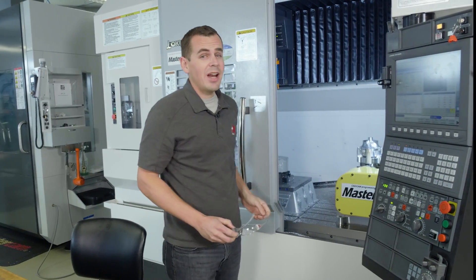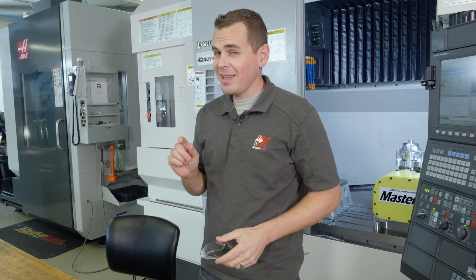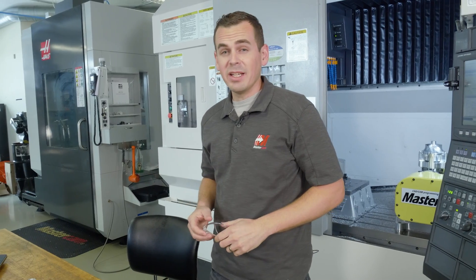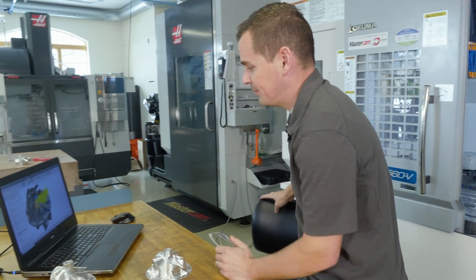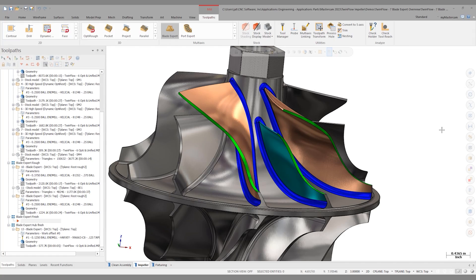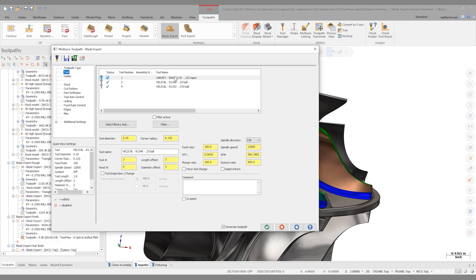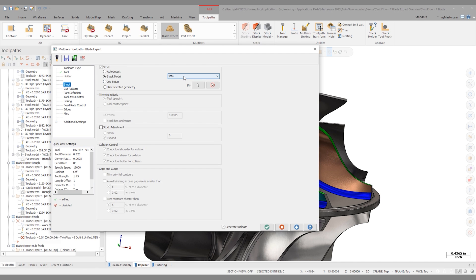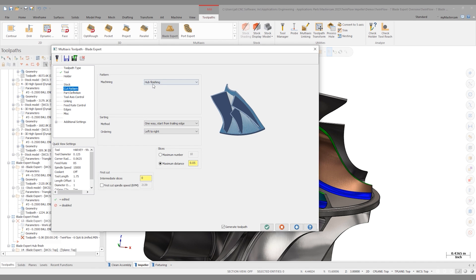All right, with our roughing strategy figured out, let's move on to finishing. And we'll start with that center splitter and look at what we can do inside of Mastercam. To start programming a finishing operation, I'll go up into the multi-axis gallery and click BladeXpert. This will launch me into the parameters, and I'll pick the 1/8-inch taper tool here. For stock, it's not as important with finishing operations, but let's use impeller stock.